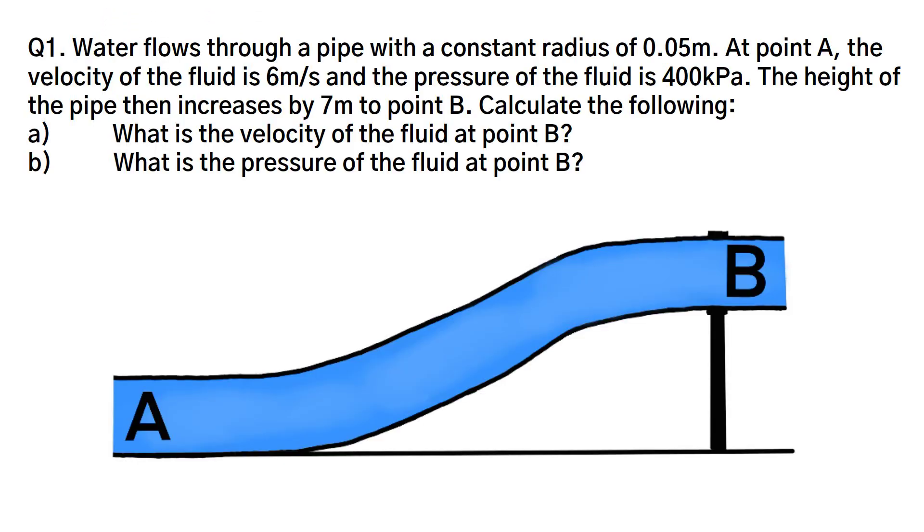Let's begin by looking at the given problem. The problem states that water flows through a pipe with a constant radius of 0.05 meters. At point A the velocity of the fluid is 6 meters per second and the pressure of the fluid is 400 kilopascals. The height of the pipe then increases by 7 meters to point B.